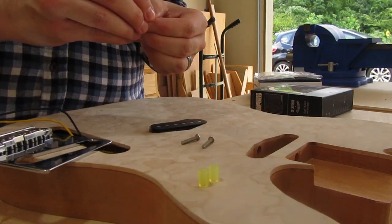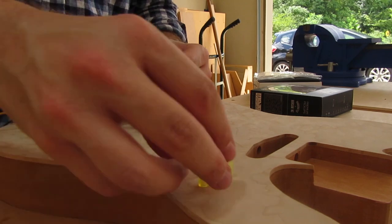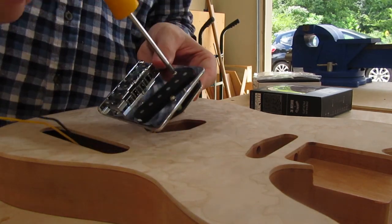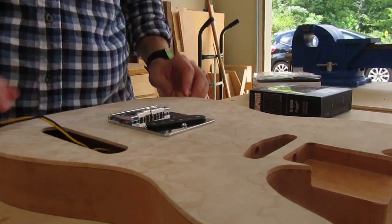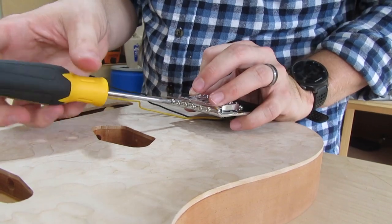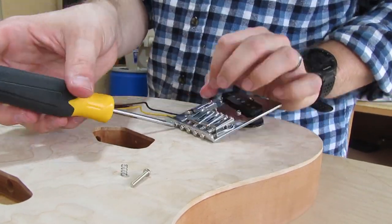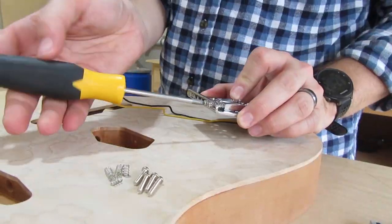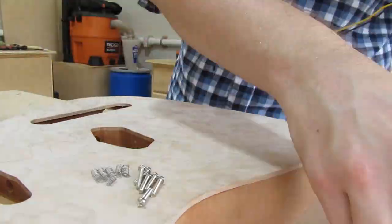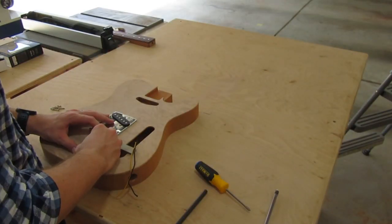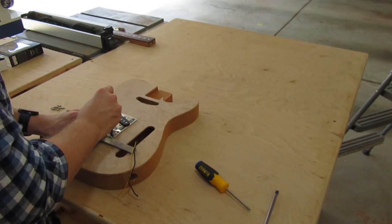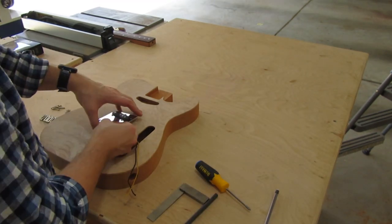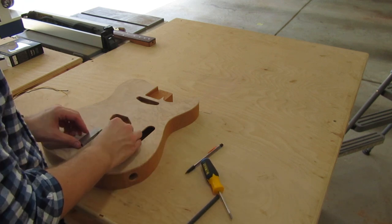This part's the most tricky part of building a Telecaster or really any guitar that has through holes for the strings. You want them to be pretty straight on the back of the guitar. Otherwise, it becomes noticeable. So you want to make sure that you take your time with this. Now, in order to actually mount the bridge, you have to take off all the saddles for the strings. And now I'm aligning it and making sure that I have it nice and straight relative to the center line.